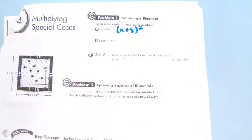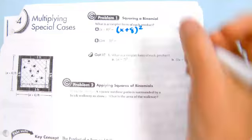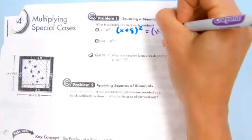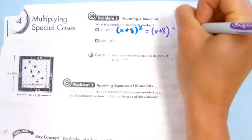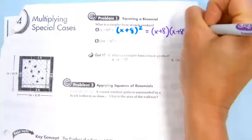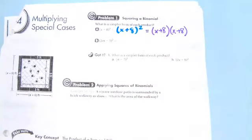You cannot do that with a binomial because what this means is the whole quantity is squared. What this actually means is x plus 8 times x plus 8. Squared means times itself.